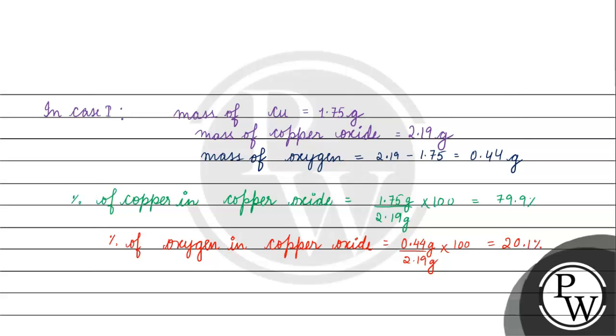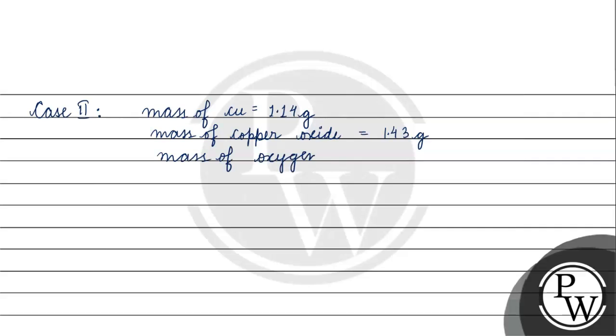Now let's talk about Case 2. Mass of copper is basically 1.14 gram. Mass of copper oxide is basically 1.43 gram. Mass of oxygen is basically 0.29 gram.